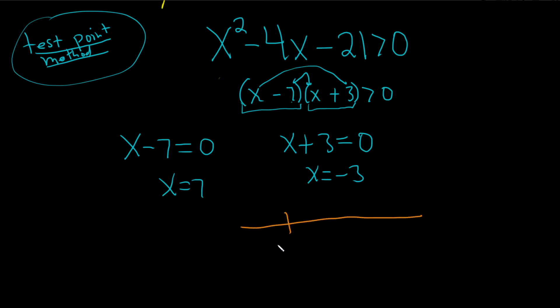So here's negative 3 and here is 7. And just pick the easiest number in the world, 0. So let's check 0. So you take 0 and you plug it in here to your x's. So you get 0 minus 7, 0 plus 3. And we want to see if that's greater than 0.